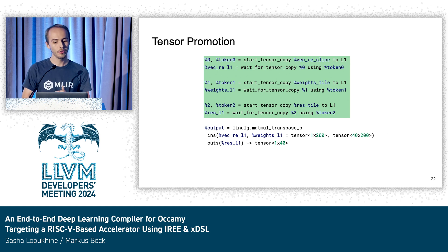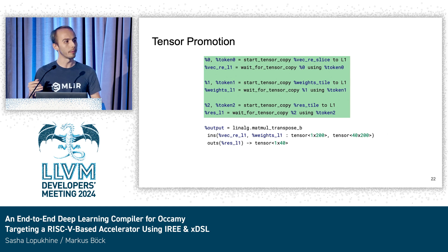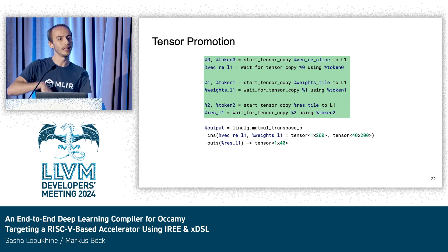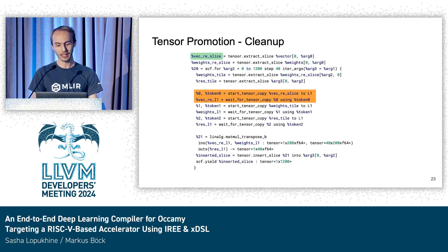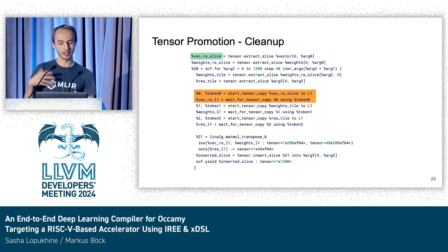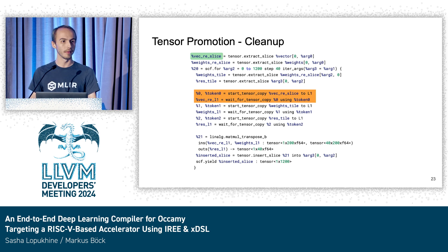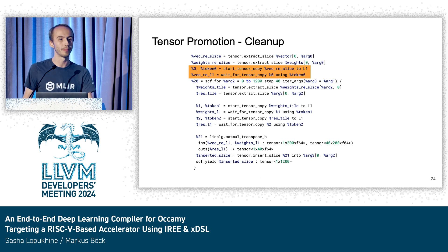Representing the move into L1, we use operations that operate on tensors — specifically start-tensor-copy and wait-for-tensor-copy operations. This already models the asynchronous nature of our DMA core and acts as an assertion that this tensor after bufferization has to be in L1. If it's already in L1, this turns into a no-op during bufferization. Since we're still in tensor land with nice SSA use-def chains, we can reuse upstream MLIR optimizations — for example, a copy of a tensor reslice that is completely loop-invariant can be moved out of the loop, drastically reducing memory bandwidth requirements.